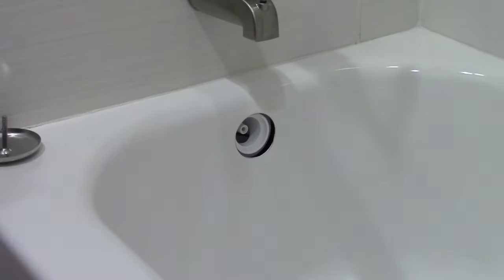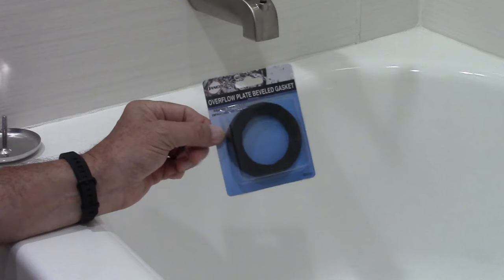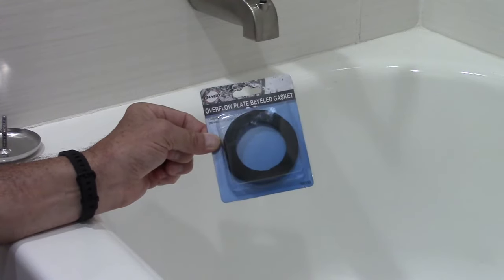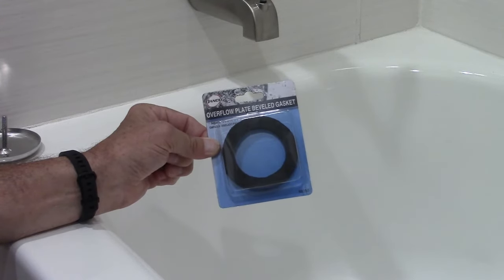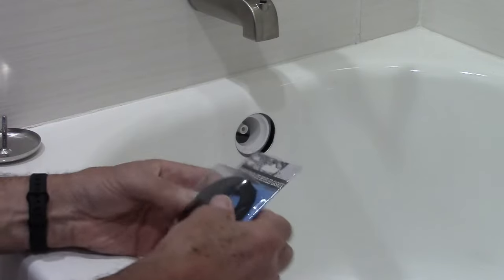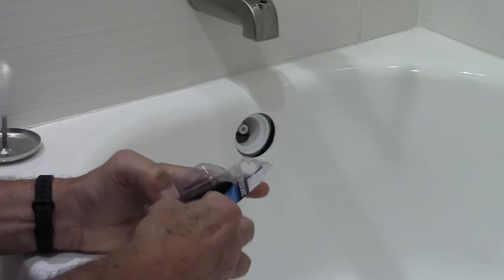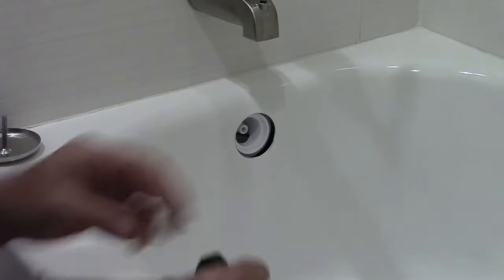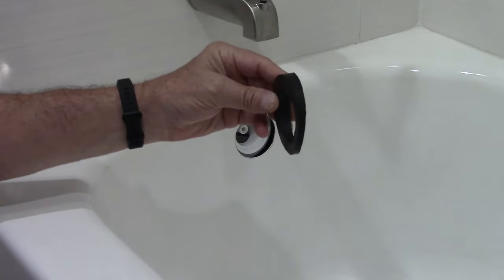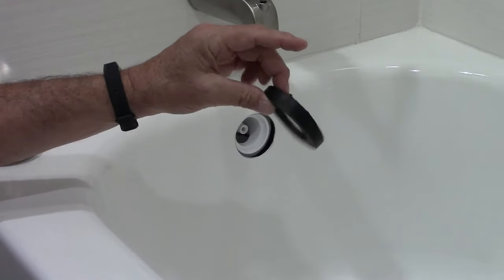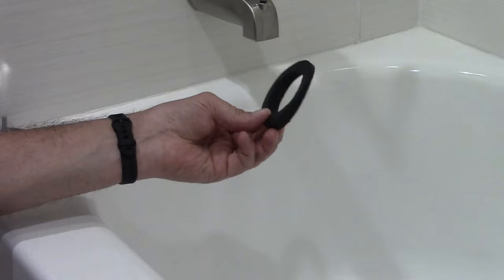Basically, I went to Home Depot and bought this Danco overflow plate beveled gasket. This was only a couple of dollars, I think like a dollar and change. This is a beveled gasket, so you'll notice that it's thicker on one side than the other.